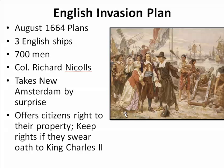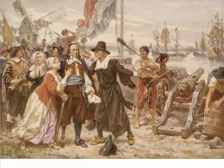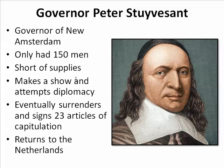The Dutch citizens saw that as a great deal — at least the English weren't coming to kill them or run them out. So they went to their governor, Peter Stuyvesant, and begged him to submit and turn control over to the English. Stuyvesant was not going to give up right away, but he knew he was limited — he only had 150 men and was short on supplies. He made a show of resistance, tried some diplomacy with Nichols, but eventually surrendered, signing 23 articles of capitulation, then returned to the Netherlands.